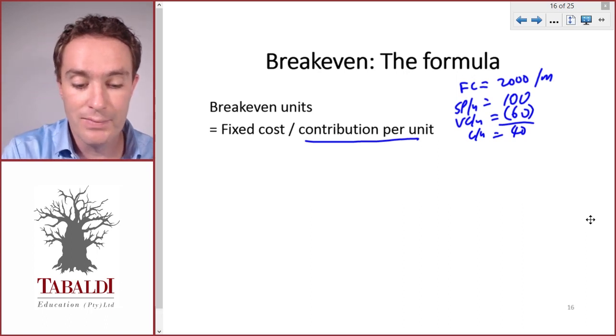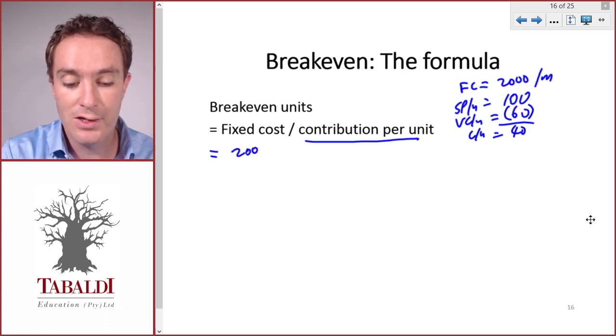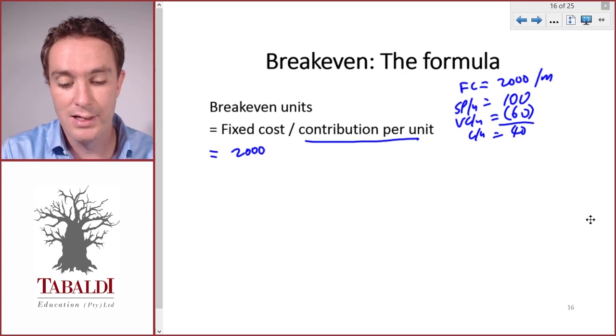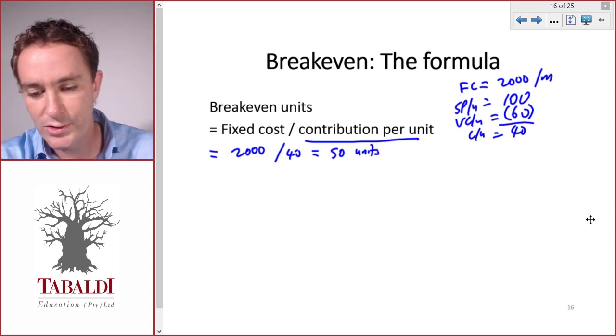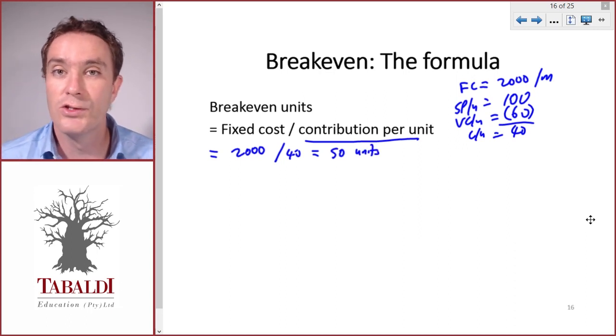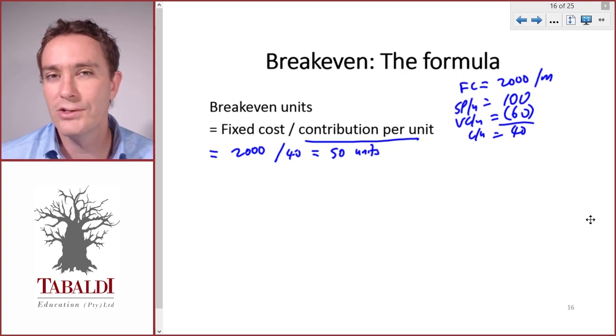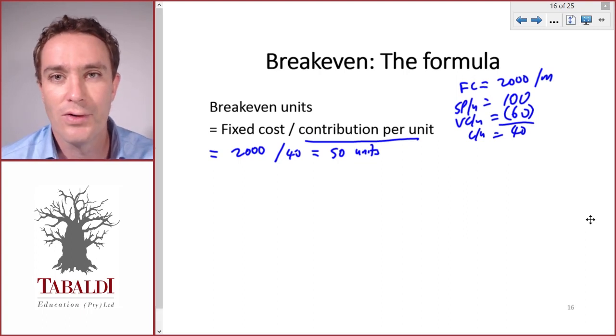So now our breakeven would be fixed cost 2,000 divided by contribution per unit of 40 equals 50 units. We need to sell 50 units in order to breakeven or to make zero profit.